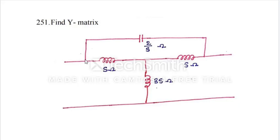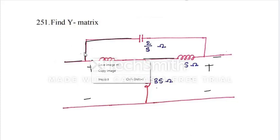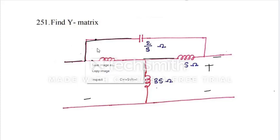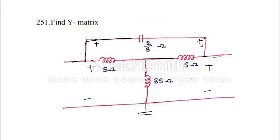Here this part is one network and this other part we have taken as another network. I can say this is positive and negative here, and this is also positive and negative here. This is positive for this network and also positive for this network. Both points are the same — positive and negative means ground. We can take a single ground, and this point and this point are the same: both positive, both ground.